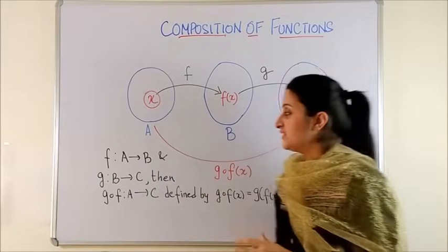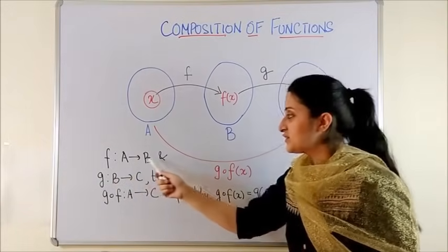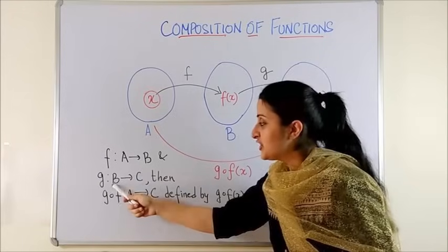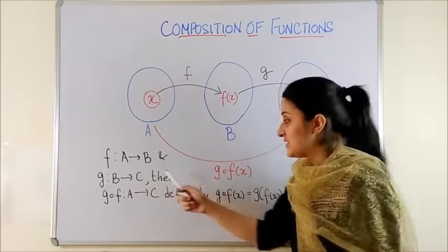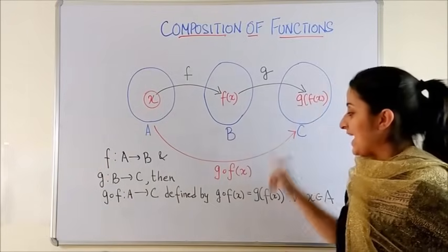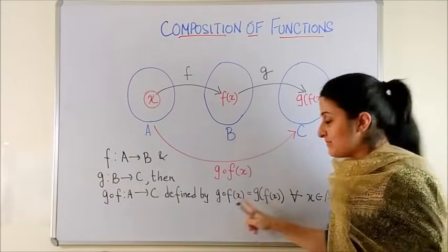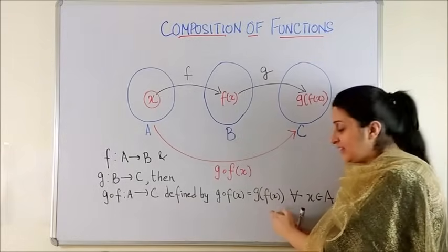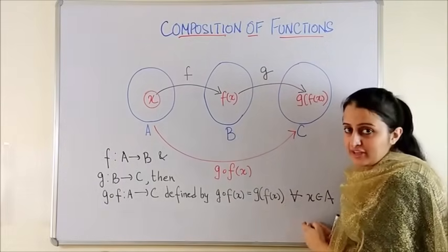So to define the function we say if F is a function from A to B and G is a function from B to C, then G of F is defined from A to C as G of Fx means G applied to Fx for all x belonging to A.